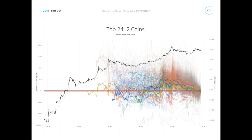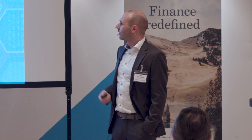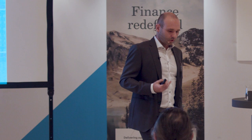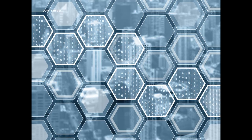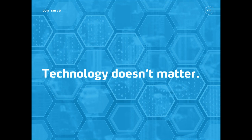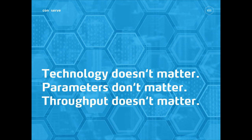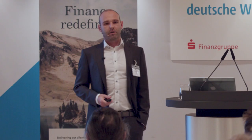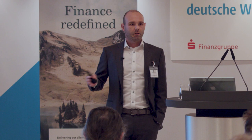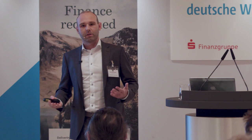The conclusion is that technology doesn't matter for cryptocurrencies — the parameters don't matter, the throughput doesn't matter. Many cryptocurrencies claimed higher throughput, more velocity, more transactions, but that's not driving value. Even convenience doesn't matter — many projects said Bitcoin is the first but we know how to make it nicer, with better user interface and more convenience for the user.